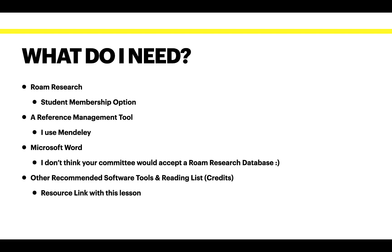You're going to need Roam Research. It does have a student membership option — when you apply for your account, there's a button to apply for student pricing. There is also a paid option called the Believer Plan, which is the one I'm on — that is a five-year purchase at $500 for five years, giving you a reduced annual rate and a whole bunch of bonuses. I believe in Roam Research because I use it for every aspect of my life — not just my PhD. I do my creative writing, life planning, and business planning in it.